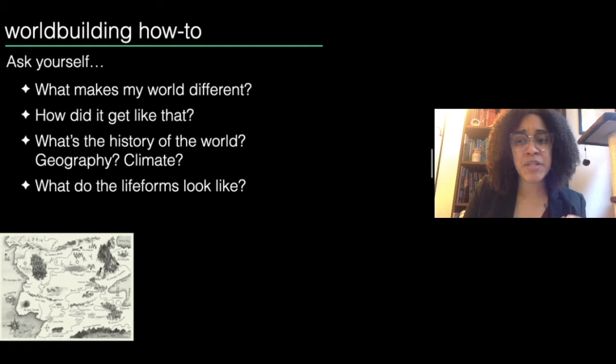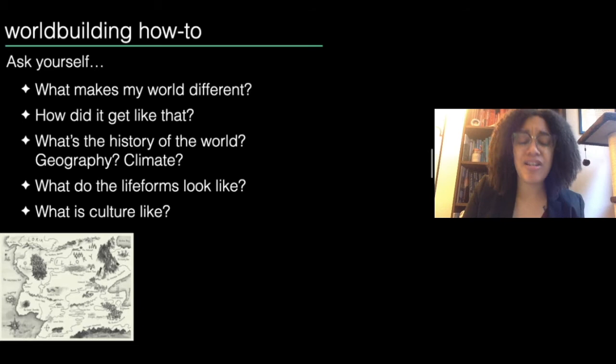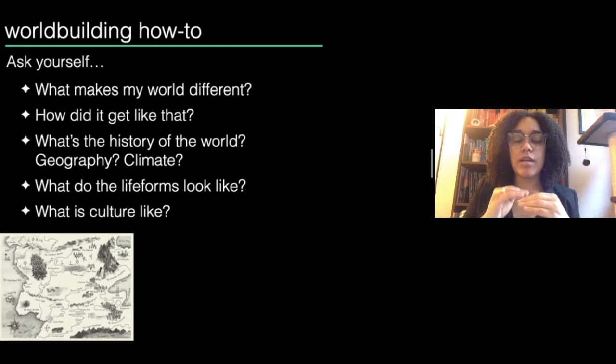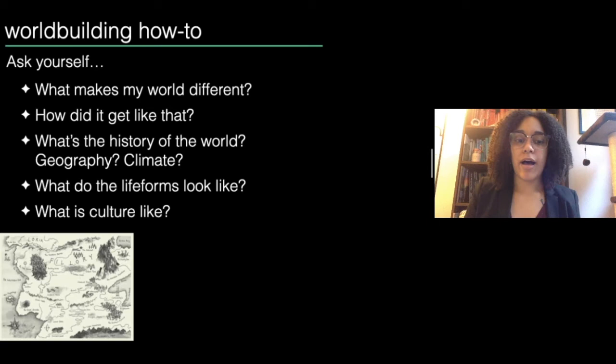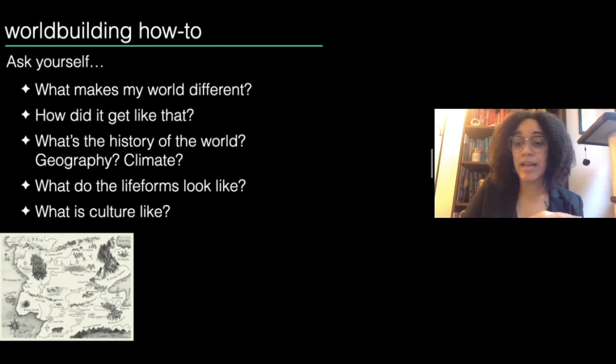Once you know what the physical environment is like, you can imagine the type of life that would form and evolve in that environment. And once you know what they look like and what their environments are like, you can start to think about their culture. Culture is a really hard thing to think about because it goes on and on — learning about other cultures is like turtles all the way down. You will never get to the bottom of it; there's always more to unpack, to uncover, to learn. Culture is endless, and if you're building a culture from scratch it can feel like a never-ending process.